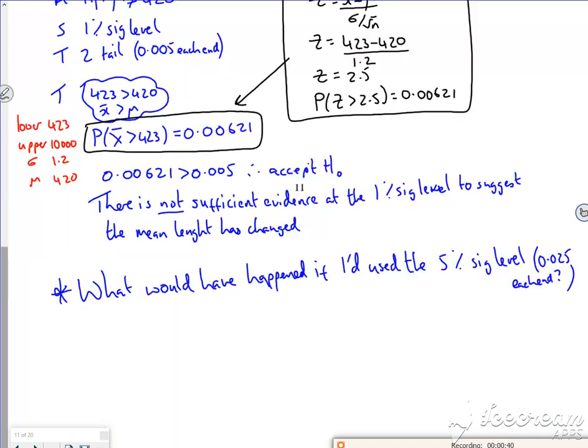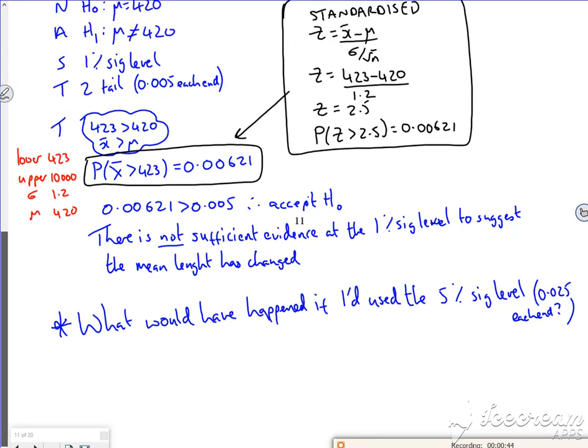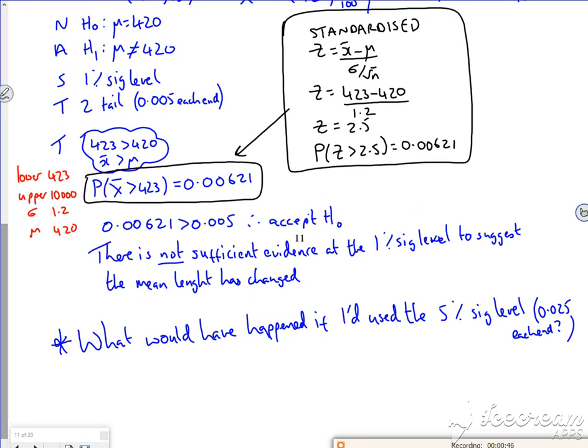But just imagine, I put down here at the bottom, imagine what would have happened if you'd used the 5%. So you were 2.5% either way, it would be a different ballgame. You'd be rejecting H₀, and this is what companies do. If you want to show that something's fine, you choose a ridiculously small significance level. If you want to prove that something's dodgy, you choose a big significance level.